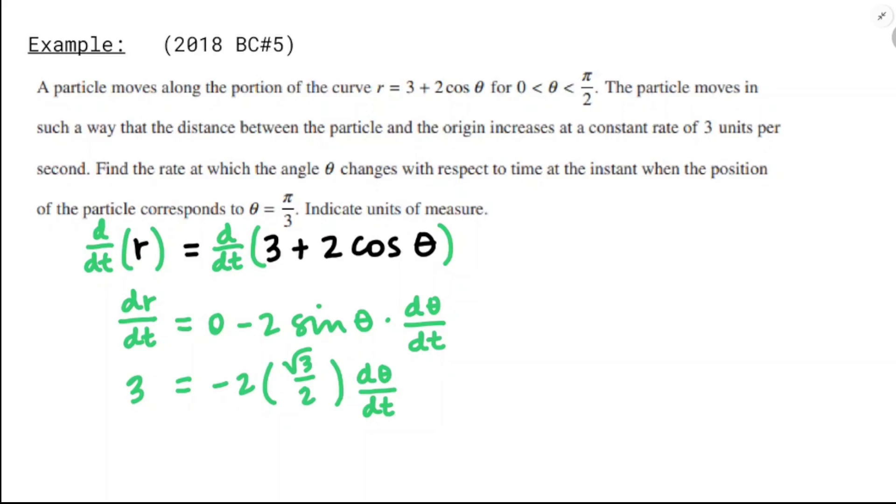Got 3 equals negative 2 times √3/2 times dθ/dt. So if I work that around and cancel off the 2s and divide both sides by the negative square root of 3, I'll have dθ/dt is 3 over negative √3, which if we needed to simplify, we could write that as the negative square root of 3.